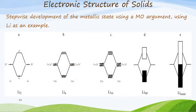Let's give an example where we show you the stepwise development of the metallic state using the molecular orbital argument, or the theory, with lithium. So let's start with diagram A on the left.